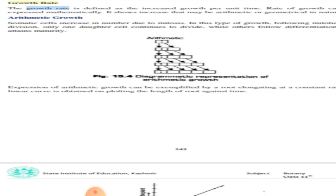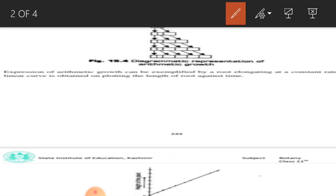On plotting growth against time, a linear curve is obtained in this case. When we plot length against time, we get a linear curve. This linear curve represents arithmetic growth where the rate of growth is constant.